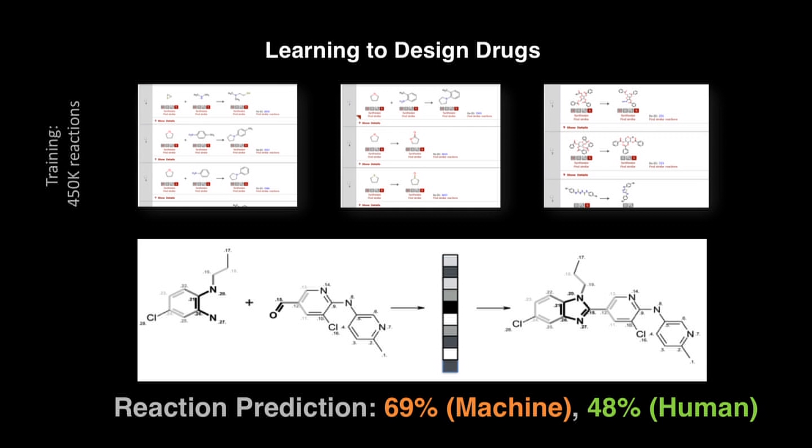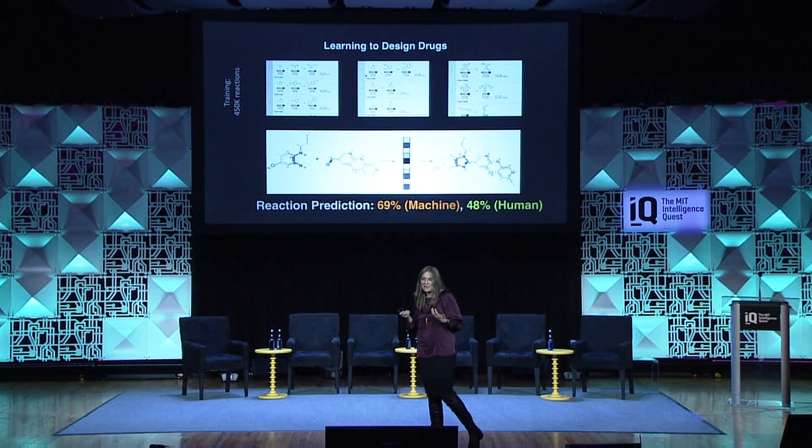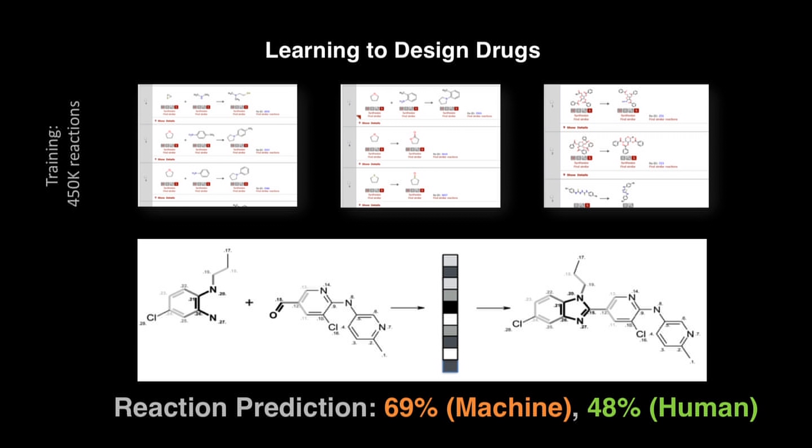Recently we started a very exciting collaboration — about two years now — with people in chemical engineering and local pharmaceutical companies, on using deep learning to design drugs. This process is currently very much done by hand and is very expensive. It's a great place to apply machine learning because you have so many reactions documented, and now we can do well on tasks that are hard for humans, like organic retrosynthesis and lead optimization. In some of these tasks we're already doing better than humans.